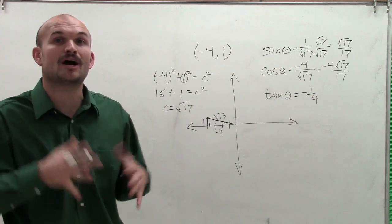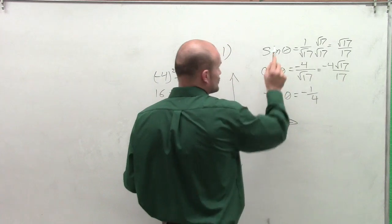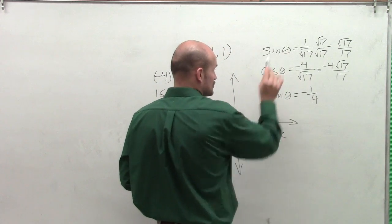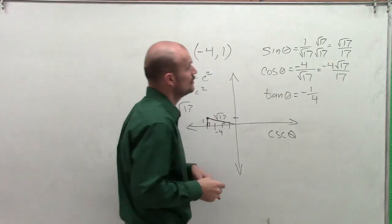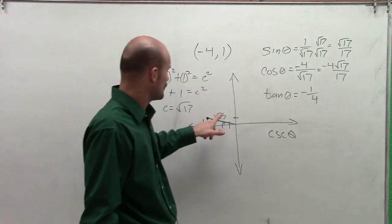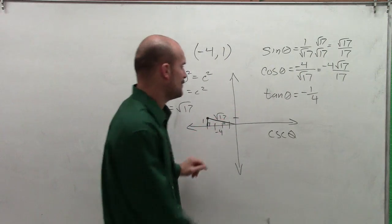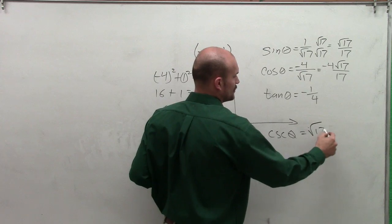But remember, we also want to find all six. So we need to use the reciprocal functions of sine of theta, which is cosecant of theta. All we're going to do is reciprocate this. So it's now going to be hypotenuse over opposite, which will just be the square root of 17 over 1, which is just √17.